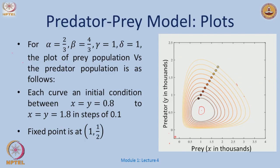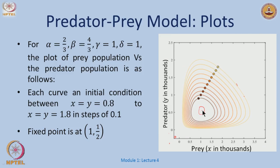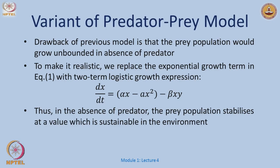These simulations are for certain values of alpha, beta, gamma, and delta. The point x-star, y-star is called a fixed point or equilibrium point when dx/dt goes to 0 and dy/dt goes to 0. In this example it is at 1 comma 1/2. We will define this more formally later. The code to draw these pictures can be shared, and all of this can be done quite easily in MATLAB.